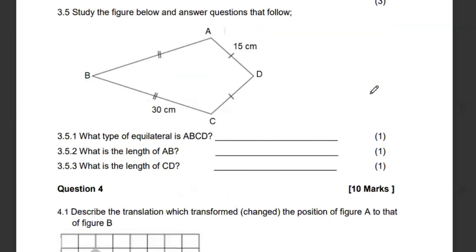Then 3.5, they're telling us to study the figure below and answer the questions that follow. What shape is this? If this marking is the same as that, this is the same as that, meaning that this is a kite. And we know that a kite has two sides that are equal. So what type of quadrilateral is this? It's a kite. And what is the length of AB? AB is the same as this, meaning that it is 30 centimeters. Then what is the length of CD? CD is going to be 15 centimeters.